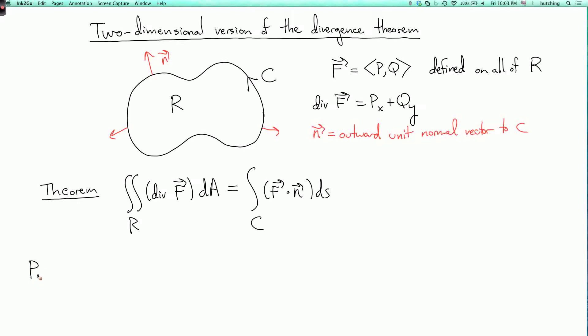so let's parameterize C as X of T, Y of T, where T goes from, say, alpha to beta.